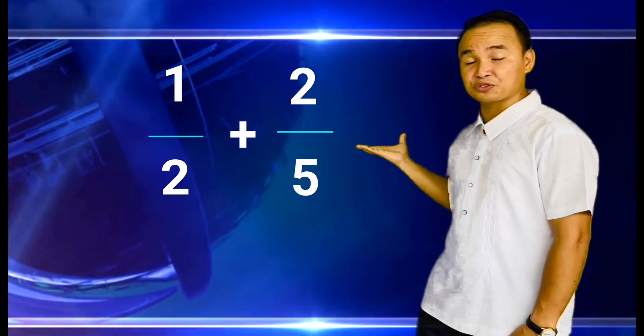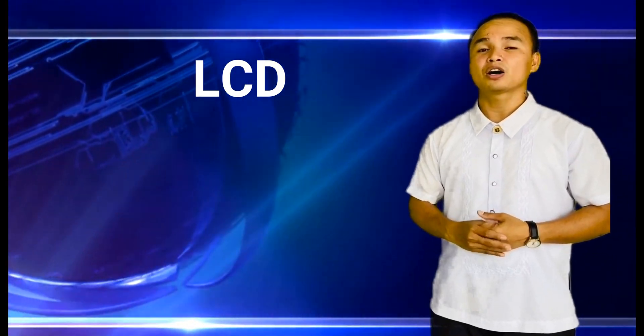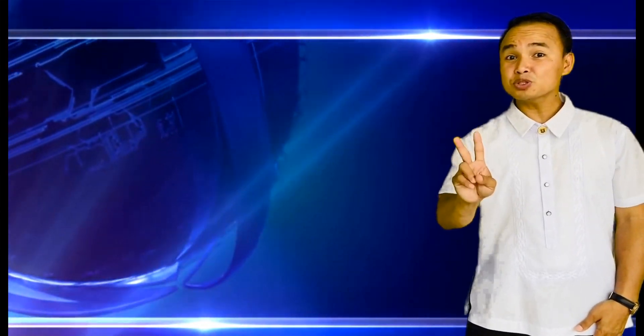For example, we add 1 half plus 2 fifth. Step 1. Determine the least common denominator. The least common denominator of 1 half and 2 fifth is 10. So we use 10. Step 2 is to get the equivalent fractions of the two dissimilar fractions.